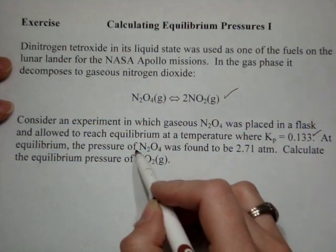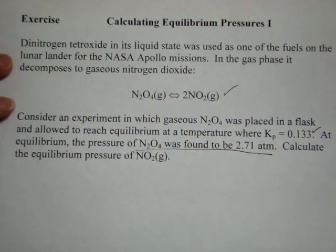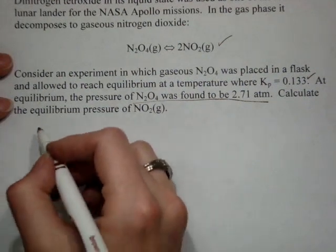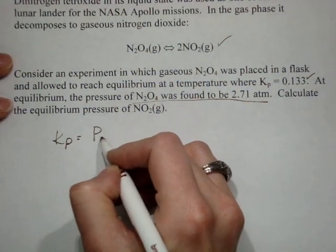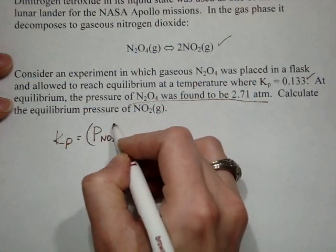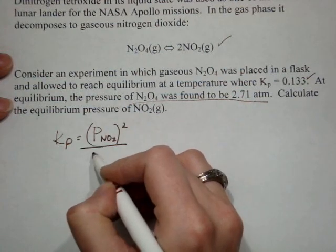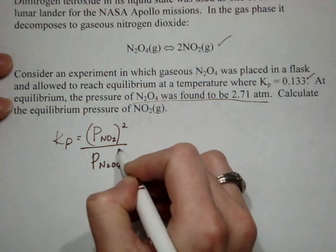And we have the partial pressure of one of the substances. So I'm going to start off by writing my Kp expression, which is going to be P of NO2 squared over P of N2O4.